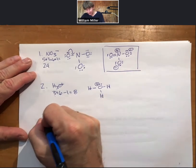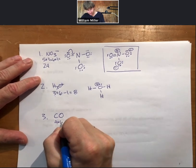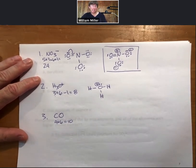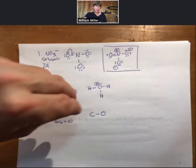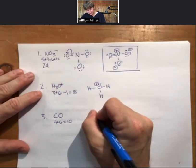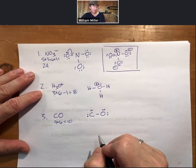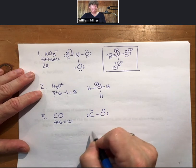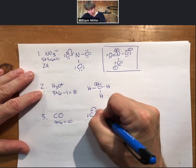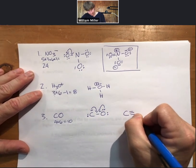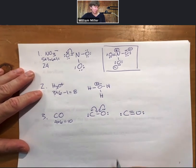Another interesting case: carbon monoxide, CO. Carbon has four plus oxygen has six — ten valence electrons. Connect them by a single bond and sprinkle electrons around: two, four, six, eight, ten. Each atom is missing two electrons and neither has an octet, so you end up with a triple bond and one lone pair on each atom.